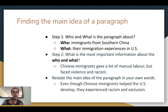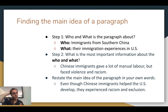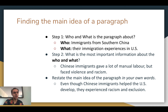Now we just want to restate the main idea in our own words — we don't copy the paragraph. So we can say: 'Even though Chinese immigrants helped the U.S. develop, they experienced racism and exclusion.' They helped the U.S., they were hard-working, but they weren't really appreciated for their work — they experienced racism, exclusion, and violence. That's the most important thing the author wants us to know.